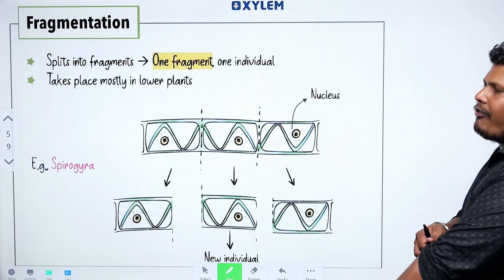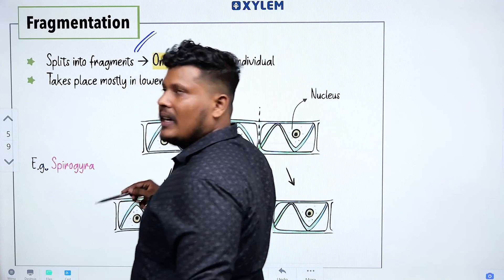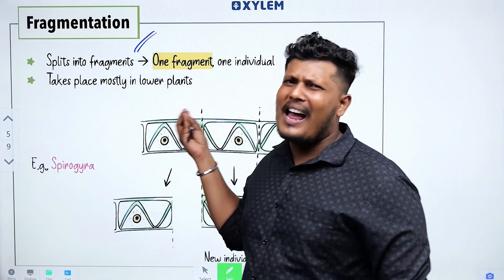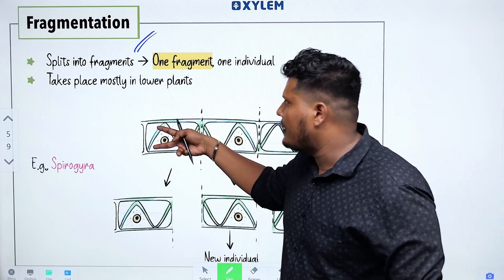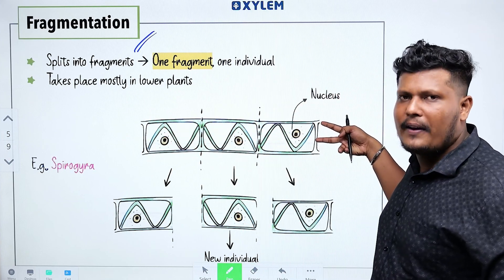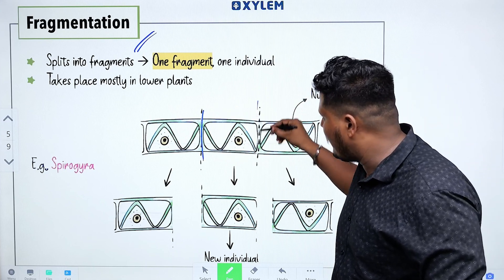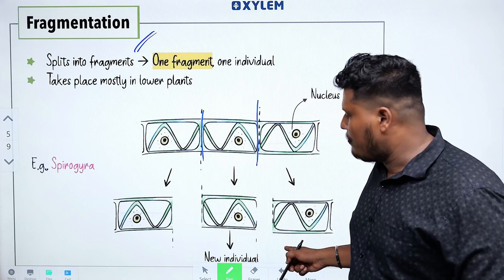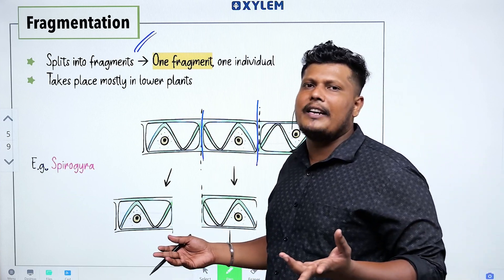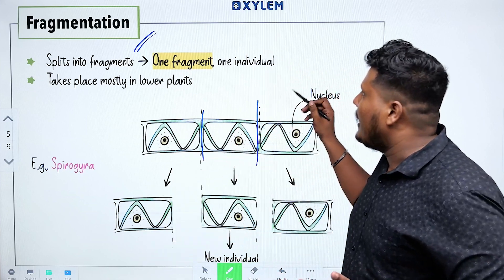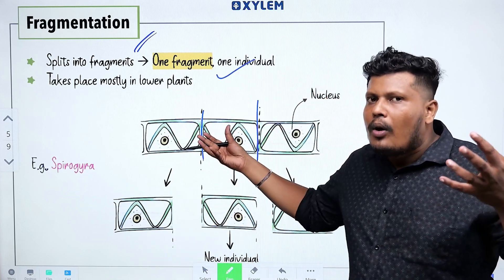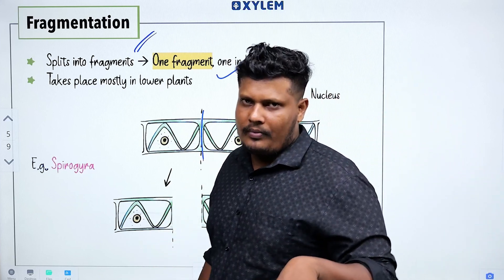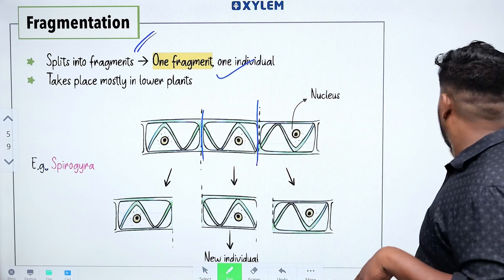Another mode of asexual reproduction is Fragmentation. It is seen in Spirogyra. The filament of Spirogyra breaks into fragments, and each fragment grows into a new individual. So one fragment becomes one individual — that is fragmentation.